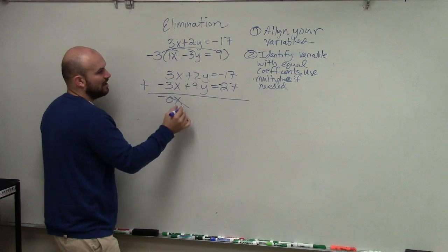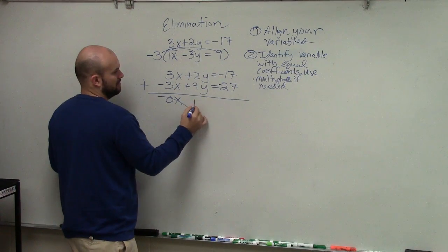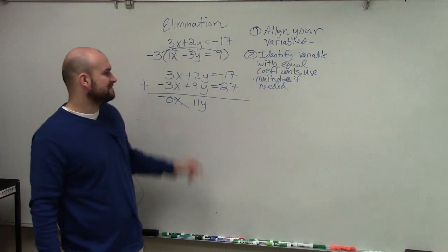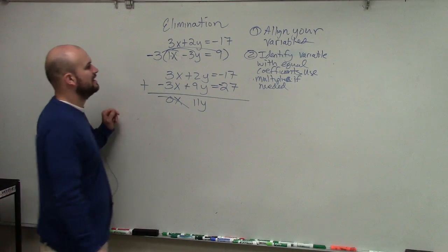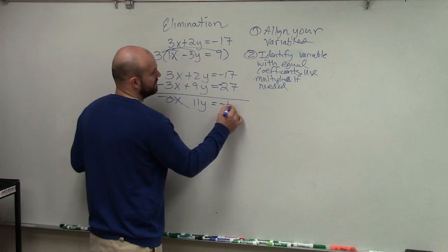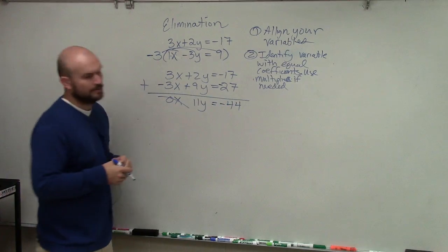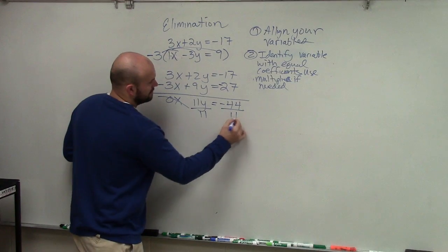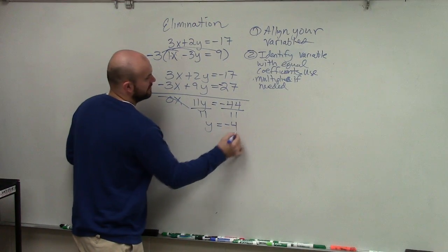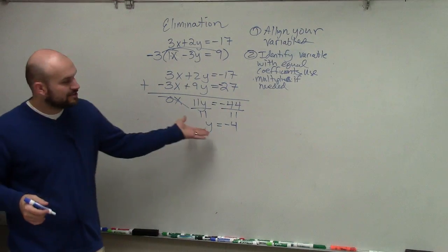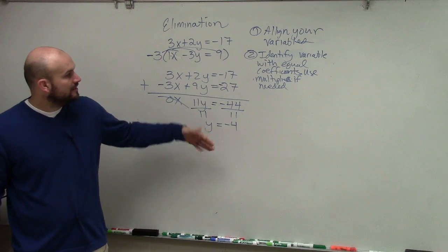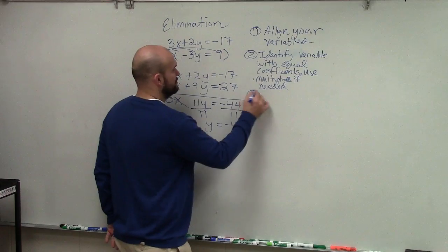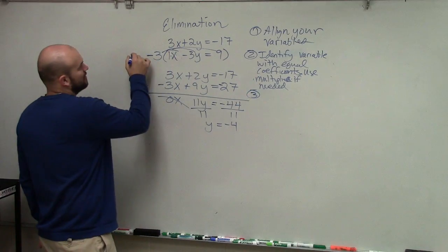2y plus 9y is going to be 11y. And negative 17 plus negative 27 equals negative 44. Step 3 is add or subtract equations. Now divide by 11 — y equals negative 4. So now I've determined my y value.